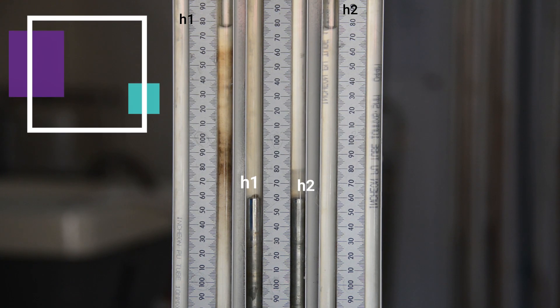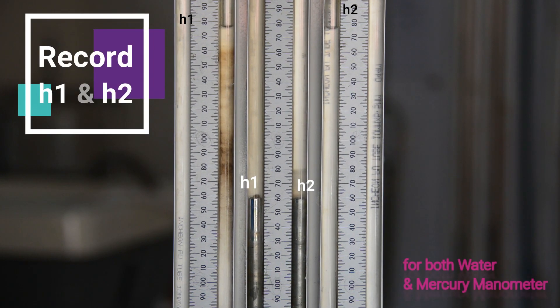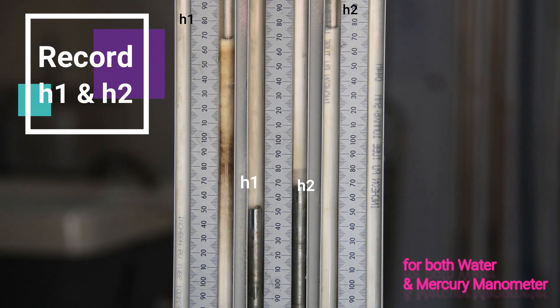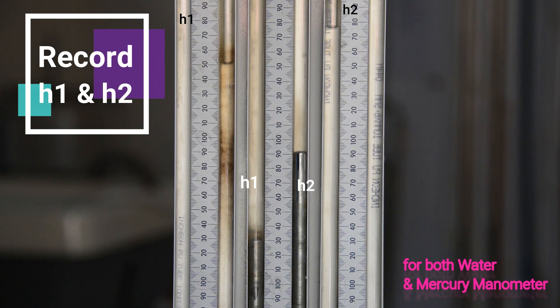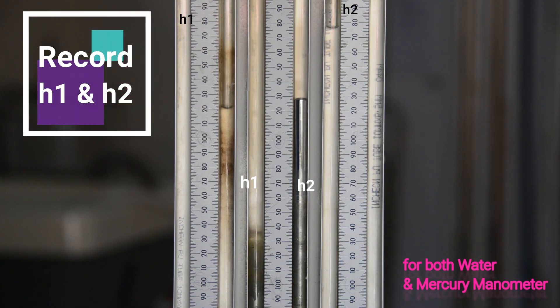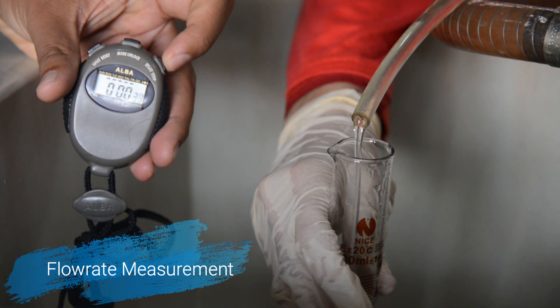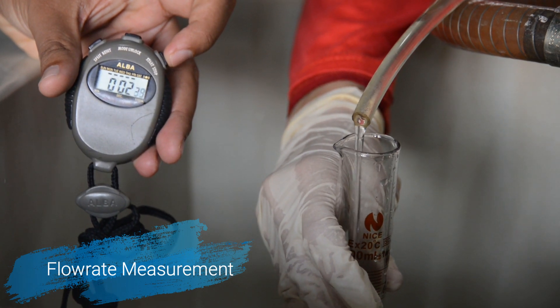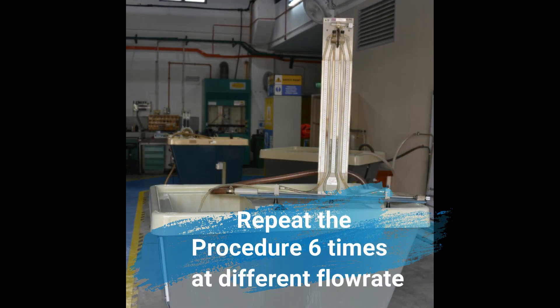Please record the manometer reading, H1 and H2, for water and mercury. You are also required to measure the time taken to fill 100 milliliters of water by using measuring cylinder. Then, record the temperature of water at least three times and repeat the same procedure six times for different flow rate.